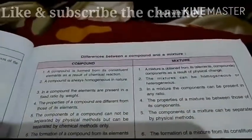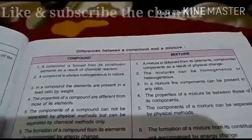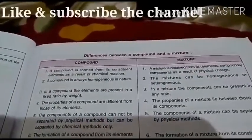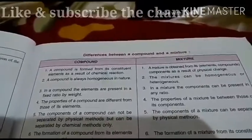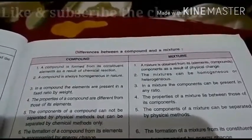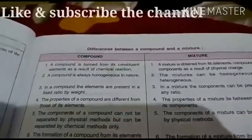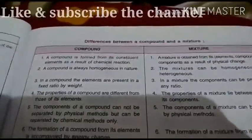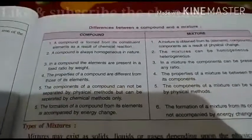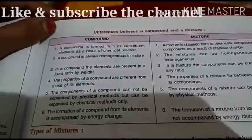In a compound, the elements are present in a fixed ratio by weight. In a mixture, the components can be present in any ratio — ratios do not matter. The properties of a compound are different from those of its elements.